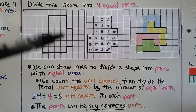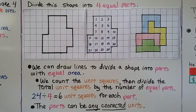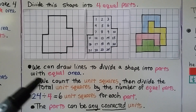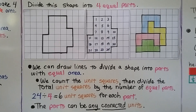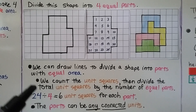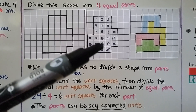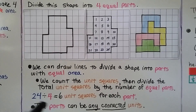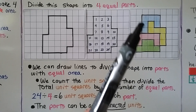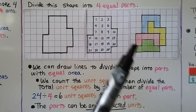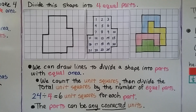We need to divide this shape into four equal parts by drawing lines. We count the unit squares — there are 24 total. We divide 24 by four equal parts: 24 divided by 4 equals 6. Each part must have six unit squares. The parts can be any connected units: the blue has six units, the yellow has six units, the red has six units, and the green has six units. That's four equal parts.